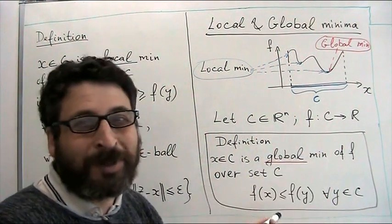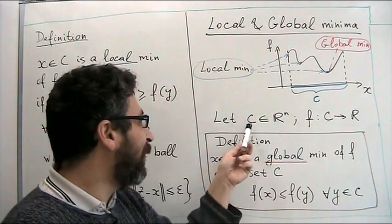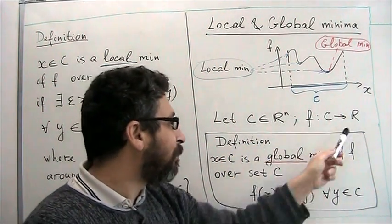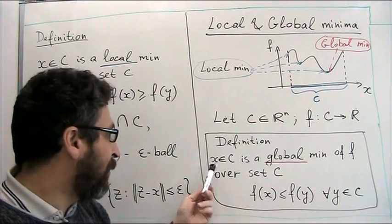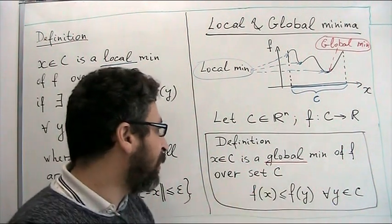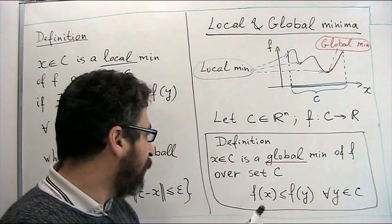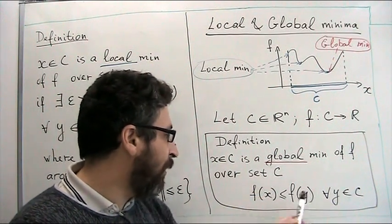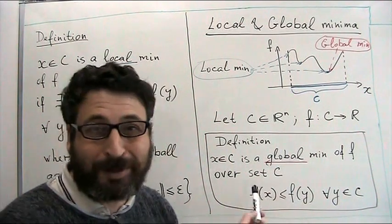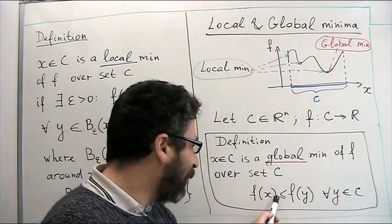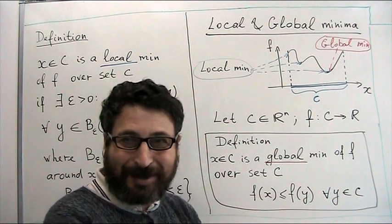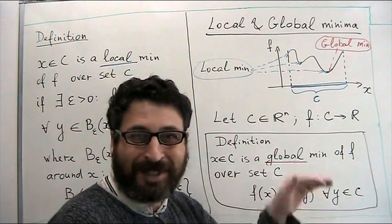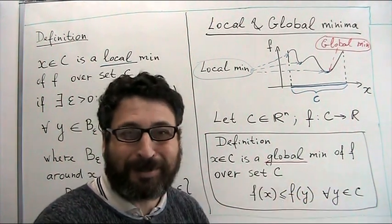And here is a formal definition. We have a function over a subset in R^n. A minimum is global over set C if for any point y from C, f of x is less than or equal to f of y. The less-or-equal is important — you may have a constant function where all points are global minima.